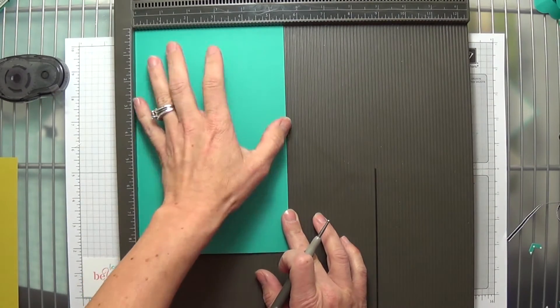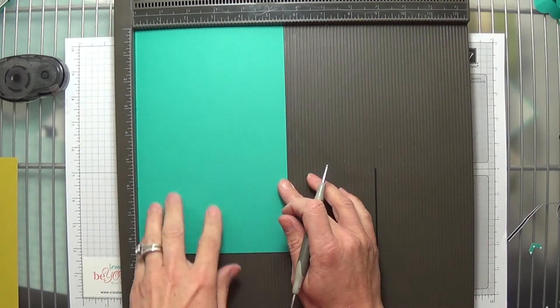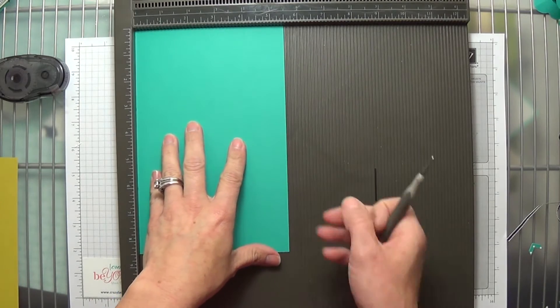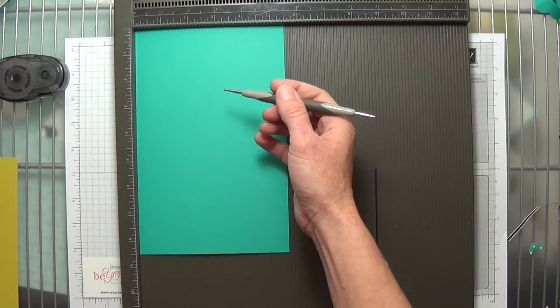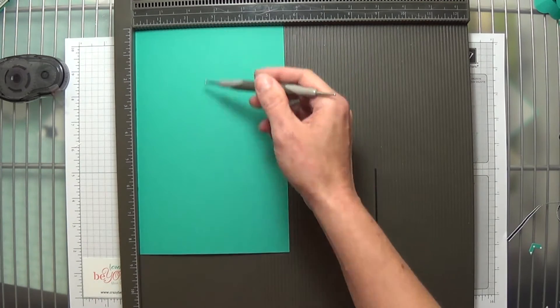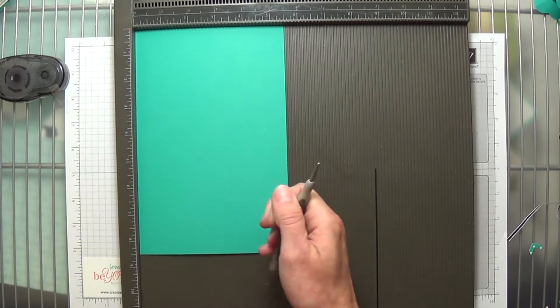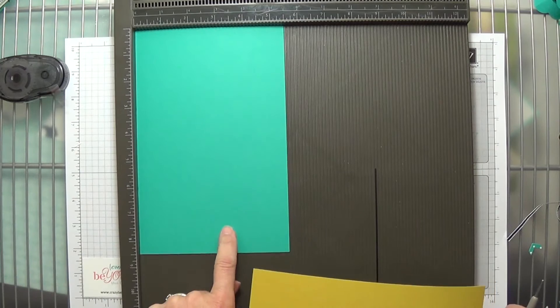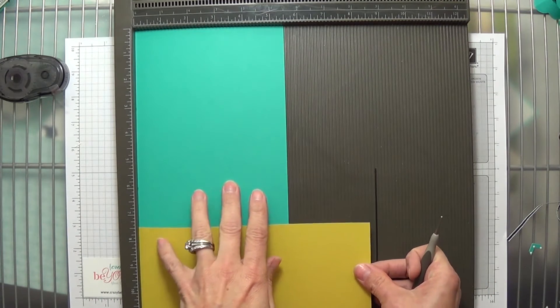You'll take your 5 1⁄2 by 8 1⁄2 inch cardstock and get it out on your scoreboard. We're going to score from 3 inches, but we only want to go down to about 7 1⁄2, so we want to hold it up about an inch from the bottom of the paper.